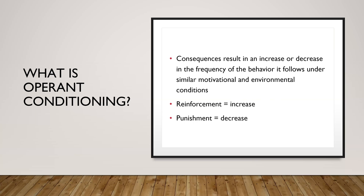If a behavior happens in the presence of an antecedent and that behavior is reinforced, that behavior is more likely to happen again in the presence of that same antecedent or environmental condition. The opposite is true for punishment — if a behavior is punished in the presence of an antecedent, it's less likely to happen in the presence of that environmental condition in the future. Consequences go to antecedents, which go to responses, which go to consequences — it forms somewhat of a circle. The antecedent evokes the behavior, the behavior is influenced by the consequence, and around and around we go. This is operant conditioning: consequences increase or decrease the frequency of the behavior they follow.